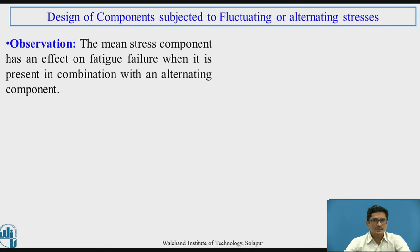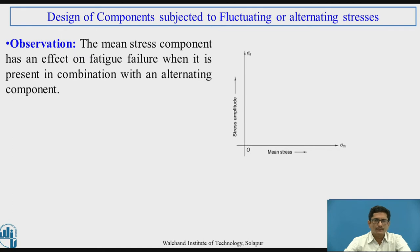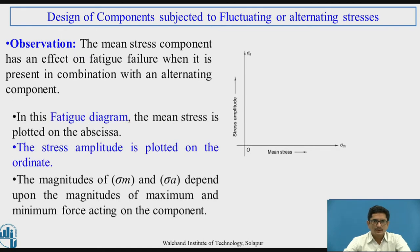The observations are such that the mean stress component has an effect on the fatigue failure when it is present in combination with an alternating component. In the fatigue diagram, the mean stress is plotted on the abscissa and the stress amplitude is plotted on the ordinate. The magnitudes of sigma_m and sigma_a depend on the magnitude of maximum and minimum force acting on the component.